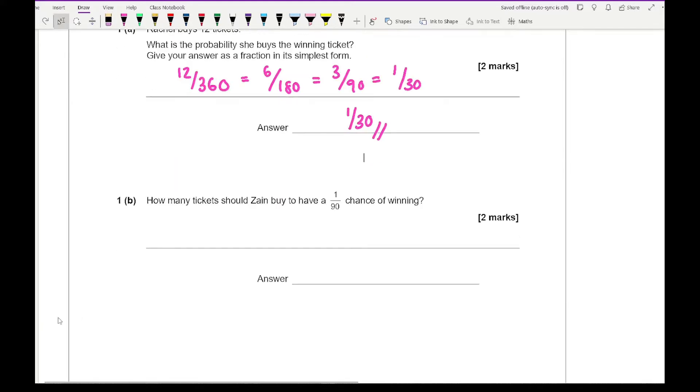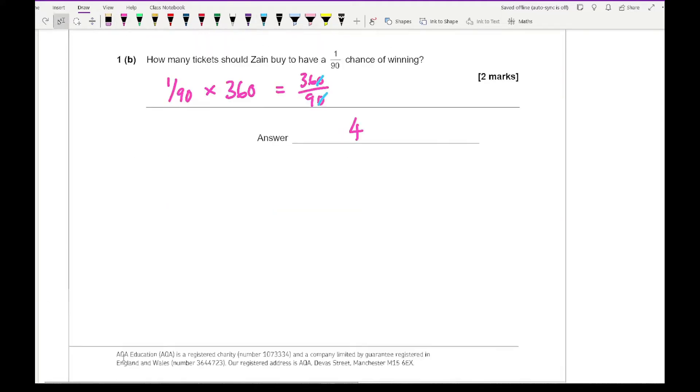Moving on to question 1b, it says how many tickets should Zane buy to have a 1 in 90 chance of winning? So here all we need to do is 1 over 90, the probability multiplied by the total number of tickets. That becomes 360 divided by 90 which gives us an answer of 4.